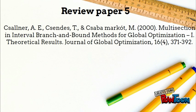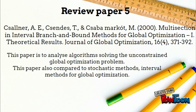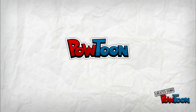Review Paper 5: This paper analyzes algorithms solving the unconstrained global optimization problem. This paper also compares stochastic methods and interval methods for global optimization.